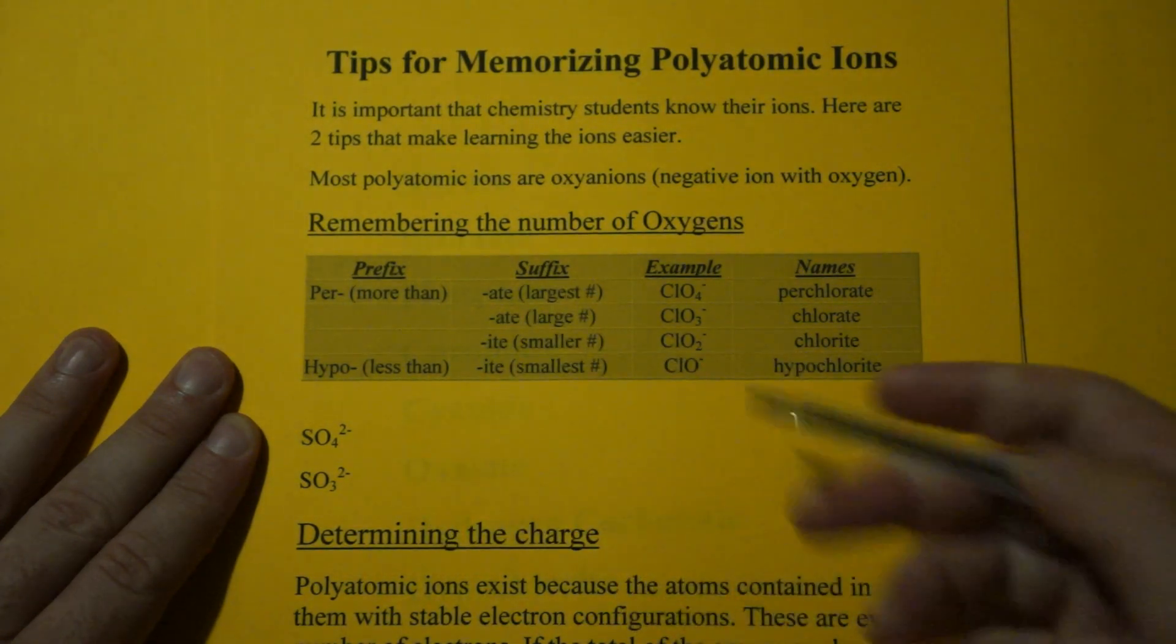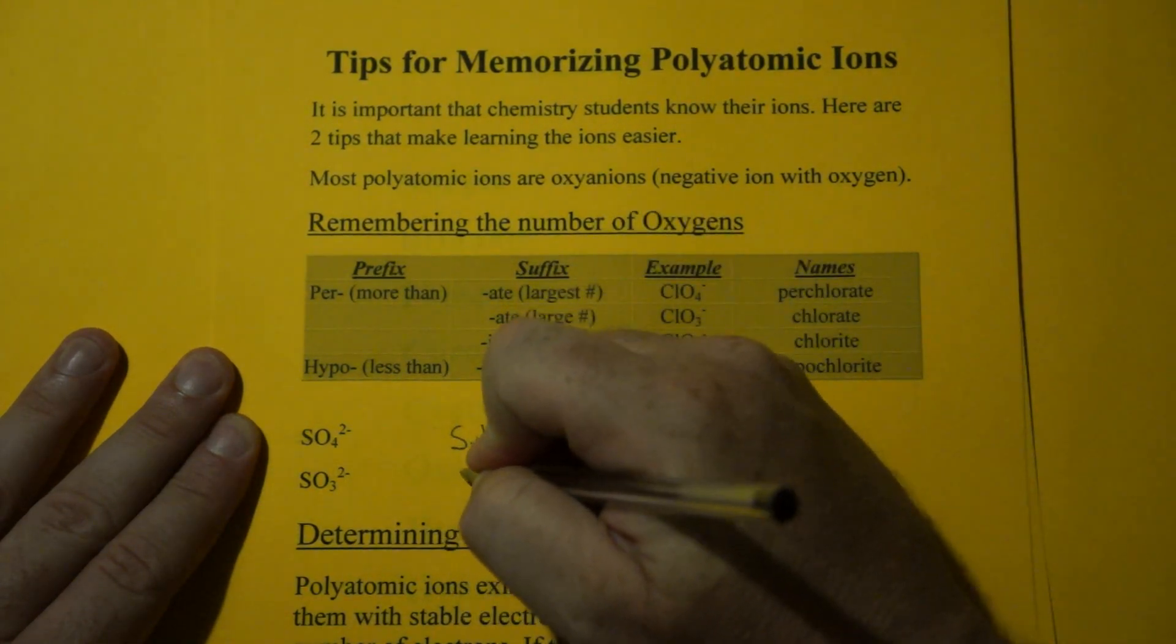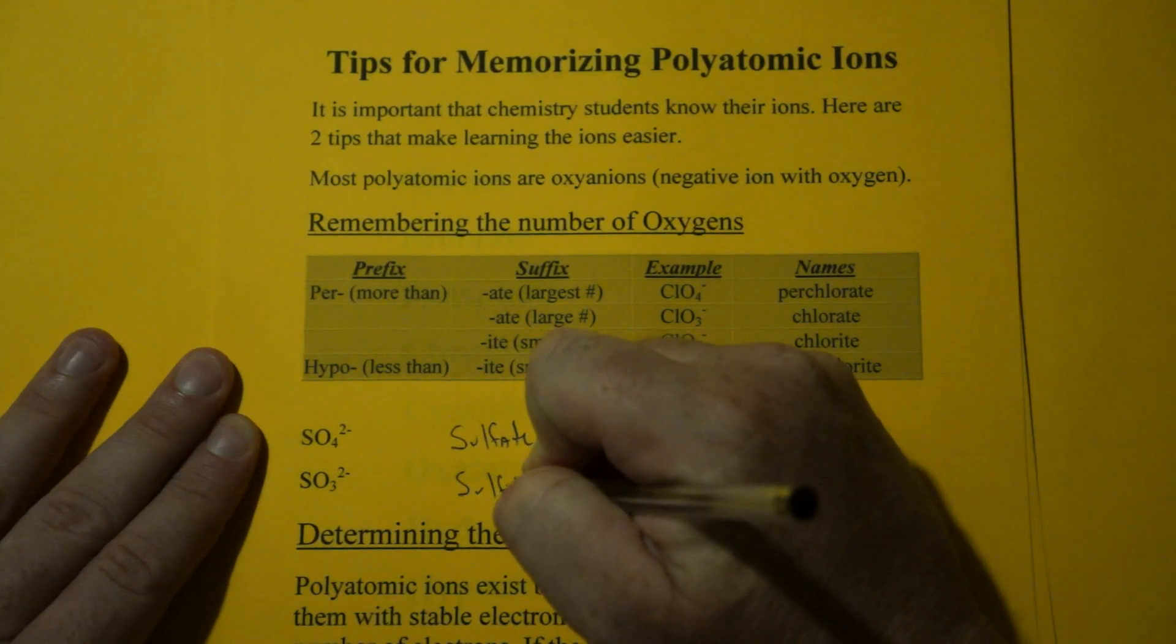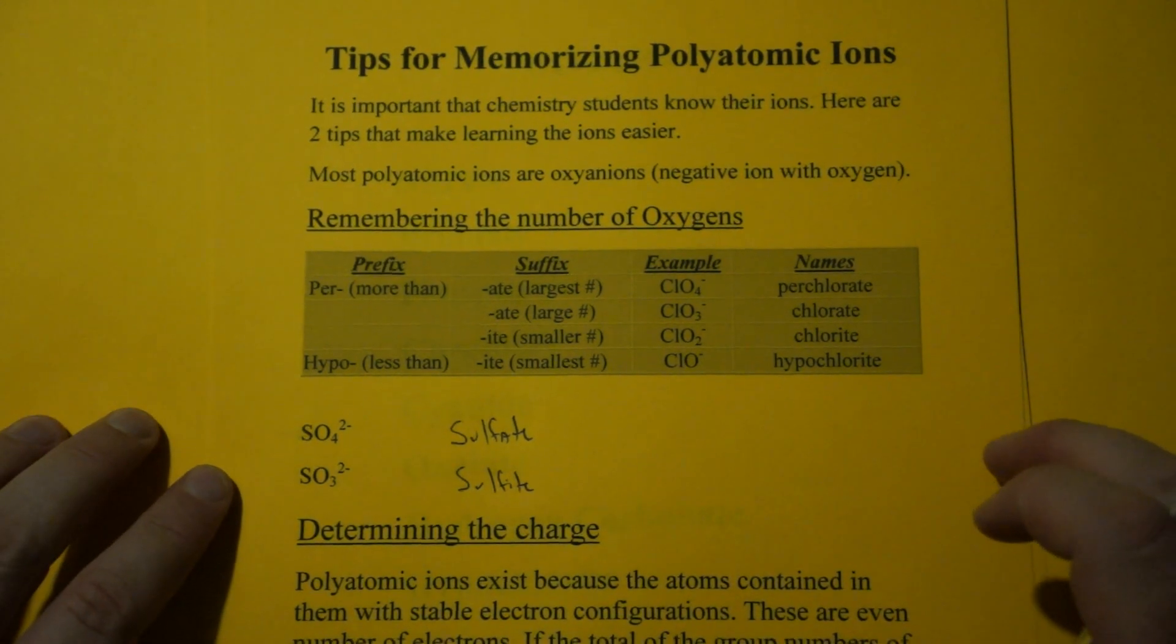SO4 minus, well that's going to be sulfate, which means SO3 minus is sulfite ion. That you just have to work on. That's how you figure out the number of oxygens.